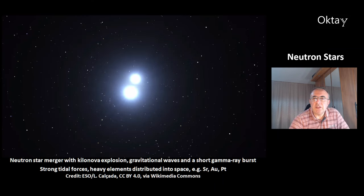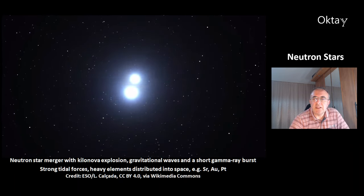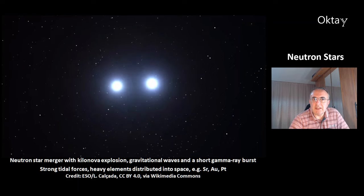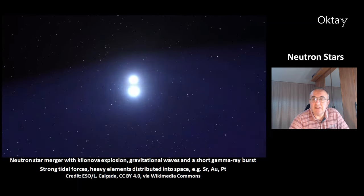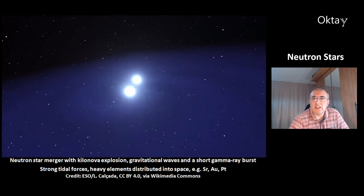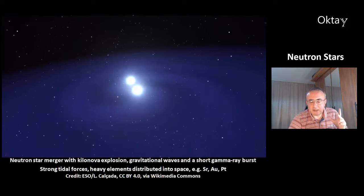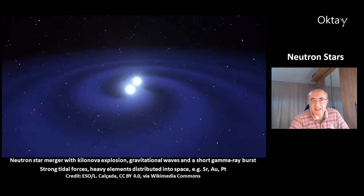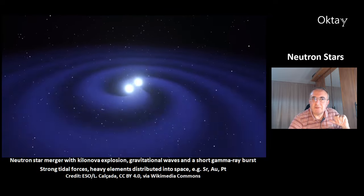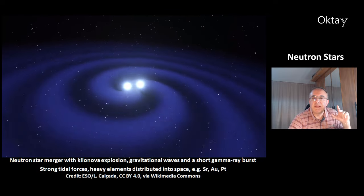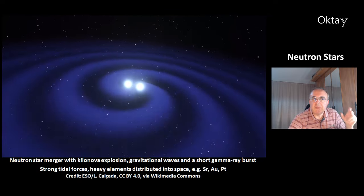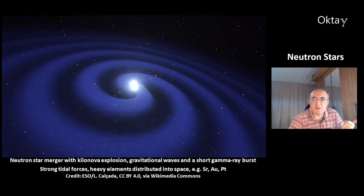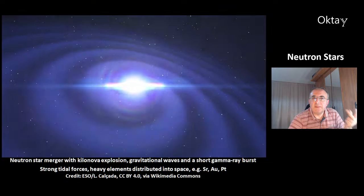This is how the neutron star merger with the kilonova explosion happens. During this event there are gravitational waves and there is a short gamma ray burst. Both objects experience strong tidal forces. The kilonova also distributes heavy elements into space — for example, the elements strontium, gold, and platinum.